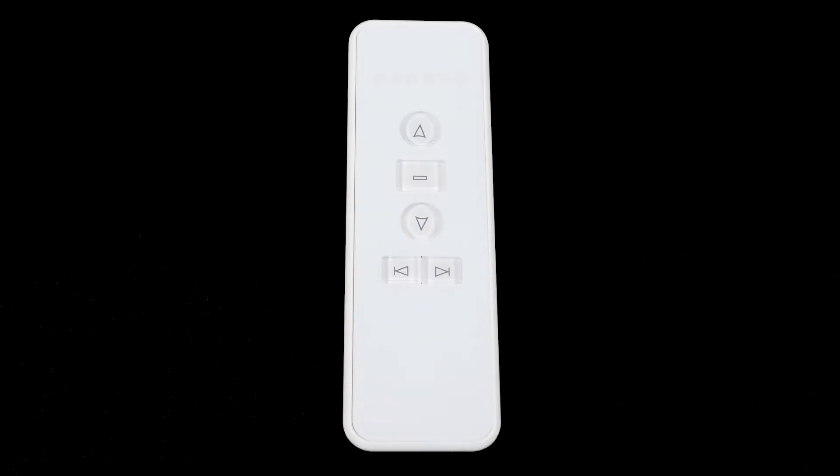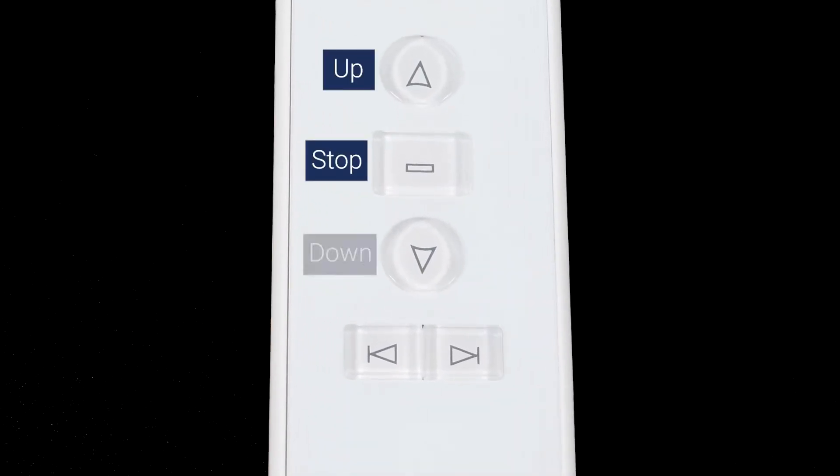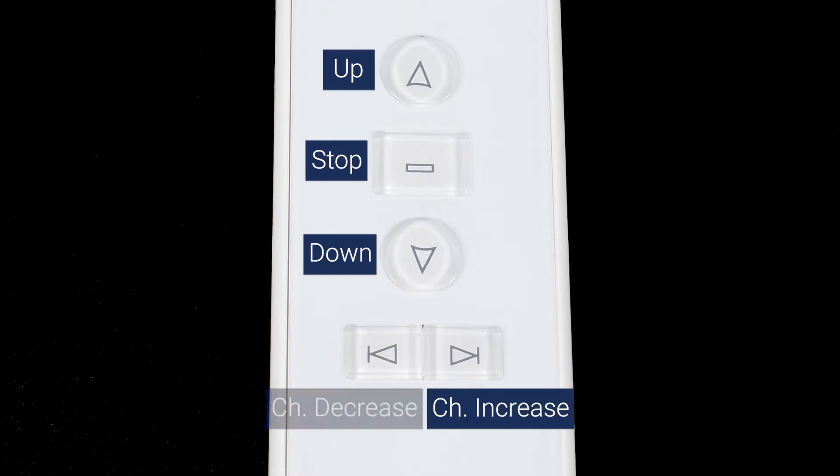You will see five buttons on the front of your remote: Up, Stop, Down, Channel Increase, and Channel Decrease.